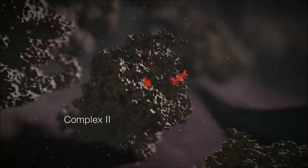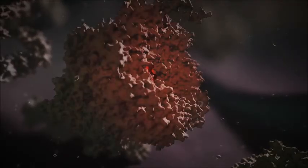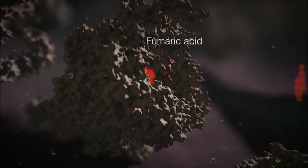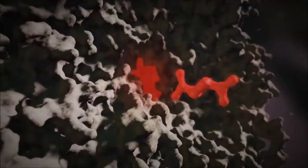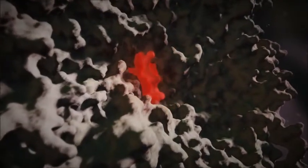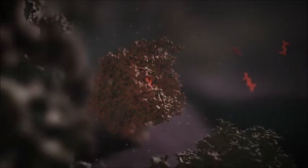Succinic acid reacts with an enzyme known as Complex II, succinate dehydrogenase, to produce fumaric acid. This fumaric acid is released to continue the energy creation process, leaving the Complex II free to accept more succinic acid in a continuing cycle of energy production.